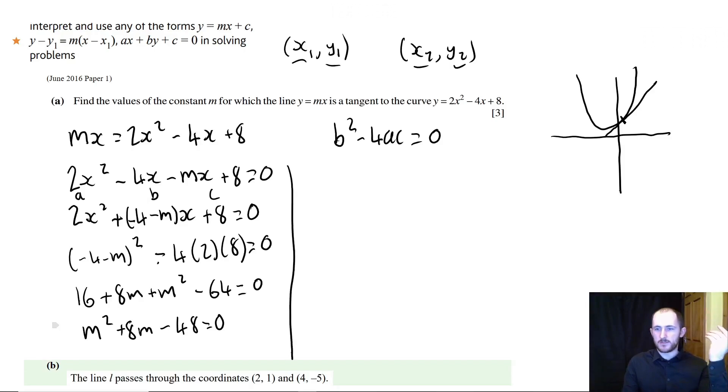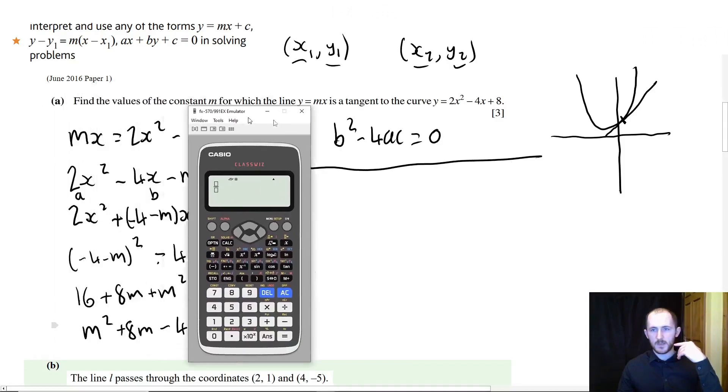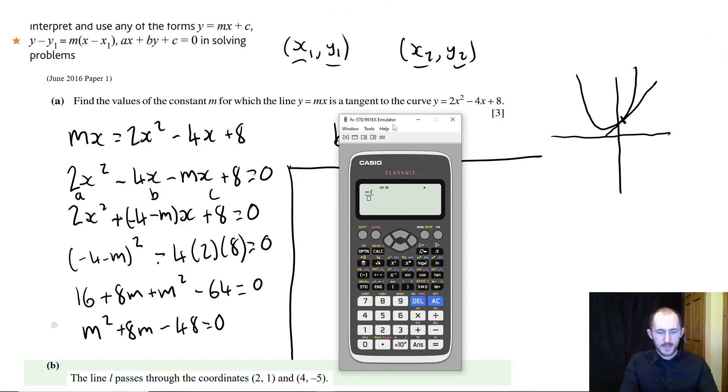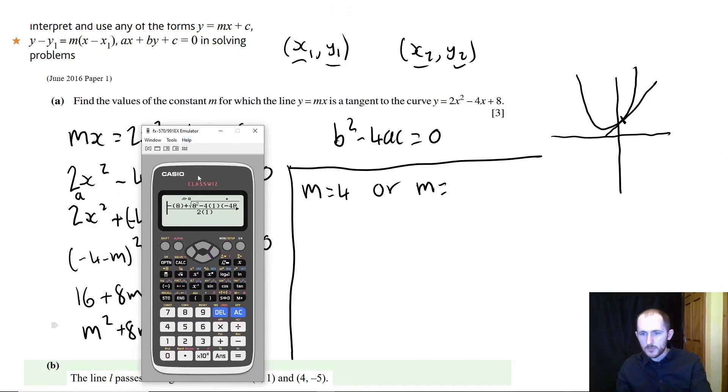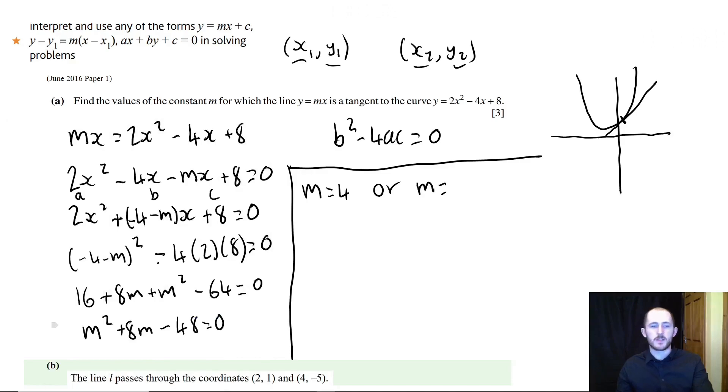You can factorise or you can use the quadratic formula. Let's just use the quadratic formula. Let's take it nice and easy. So we have minus b, and b is 8, minus b plus minus the square root of 8 squared minus 4ac over 2a. So we have an answer of either m equals 4 or m equals minus 12.